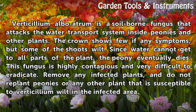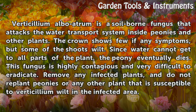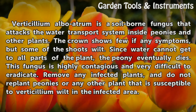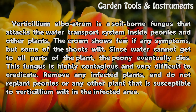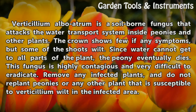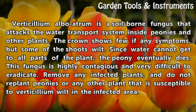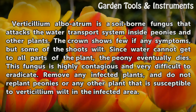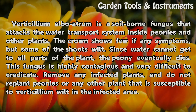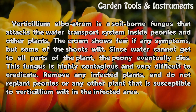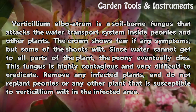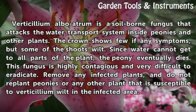Verticillium Wilt. Verticillium albo-atrum is a soil-borne fungus that attacks the water transport system inside peonies and other plants. The crown shows few if any symptoms, but some of the shoots wilt. Since water cannot get to all parts of the plant, the peony eventually dies. This fungus is highly contagious and very difficult to eradicate. Remove any infected plants and do not replant peonies or any other susceptible plant in the infected area.